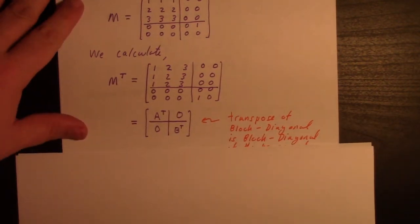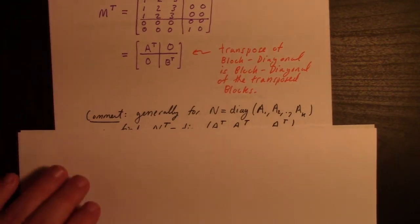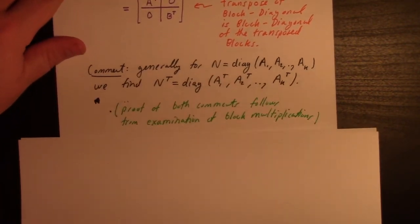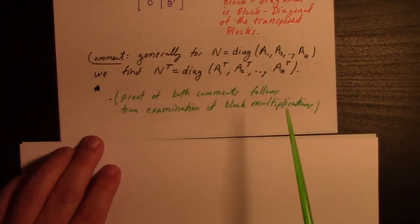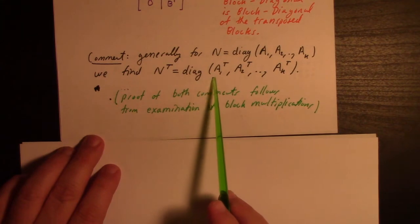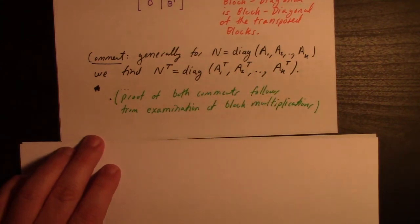So apparently, the transpose of a block diagonal matrix is the block diagonal of the transposed blocks. More generally, if we had k blocks and took the transpose, it's the block diagonal of the transposed blocks, each one all the way down.